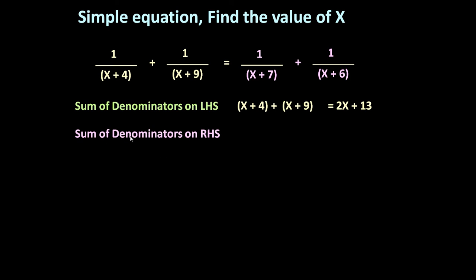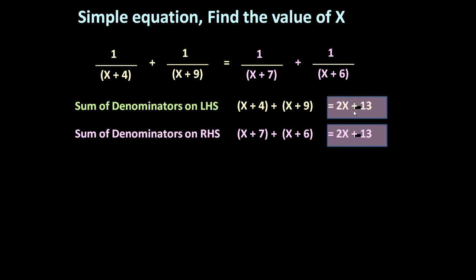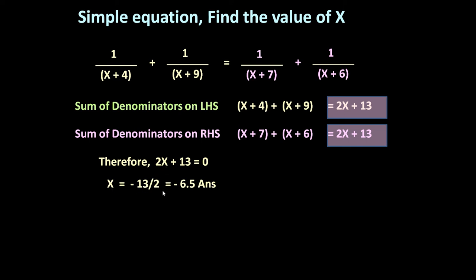Now we have to find out the sum of denominators on the right-hand side. x plus 7 and x plus 6 are the denominators on the right-hand side, so this is x plus 7 plus x plus 6, which is equal to 2x plus 13. If you see, the sum of denominators on the left-hand side and right-hand side are the same. So simply we can put any one of them equal to 0: 2x plus 13 is equal to 0. Solving it, x is equal to minus 13 by 2, which is minus 6.5. So this is the answer.